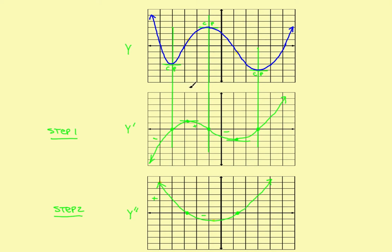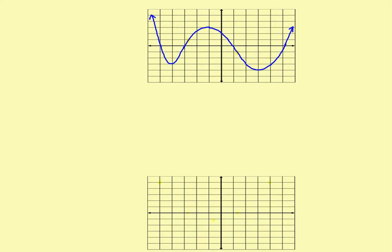So that was a two-step process using first derivative information and critical points. Now, what we're going to do in the second method is to use second derivative information and go directly to the last step, skipping the first step entirely. Rather than working with critical points, this time we'll work with where the graph is concave up, concave down, and inflection points — which is all second derivative information.